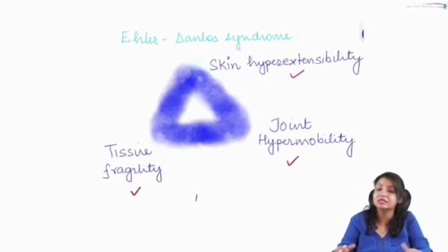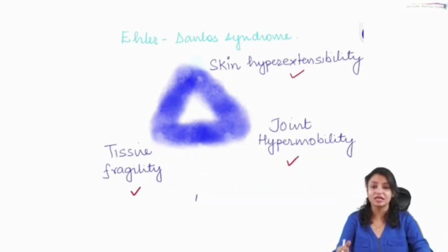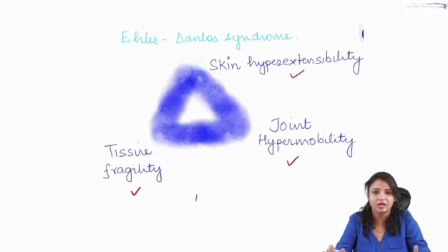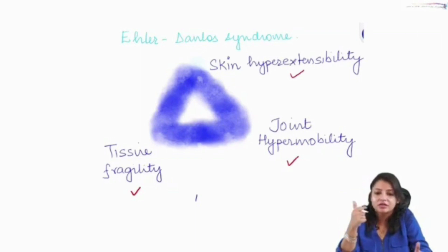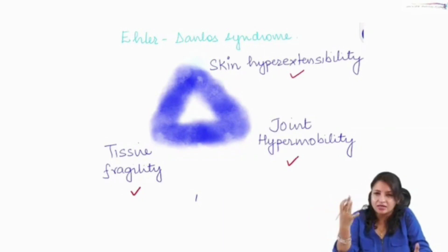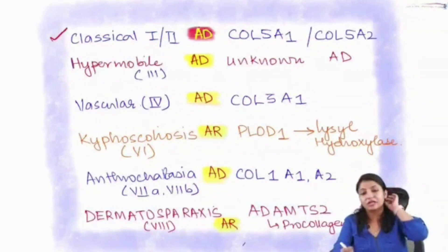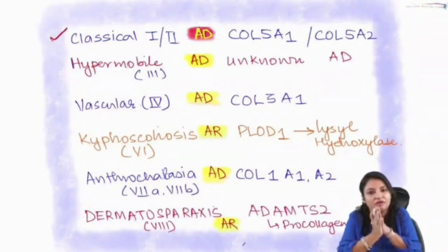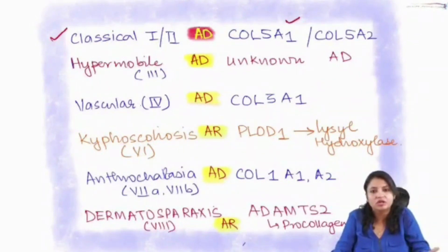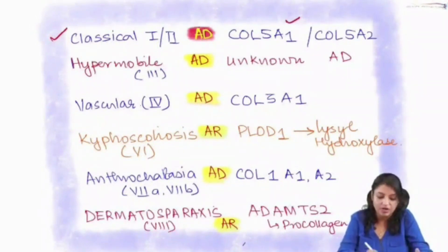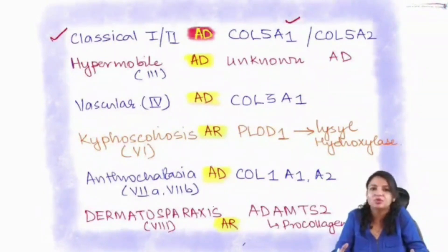Now let's remember how to recall the subtypes, which is the most frequently asked question. There are 11 molecular subtypes and six known clinical types. The first is the classical type, labeled as types 1 and 2. The most common defect in classical type is in collagen type 5 — either the alpha-1 or alpha-2 chain, i.e., collagen 5A1 or collagen 5A2. This is autosomal dominant in inheritance.